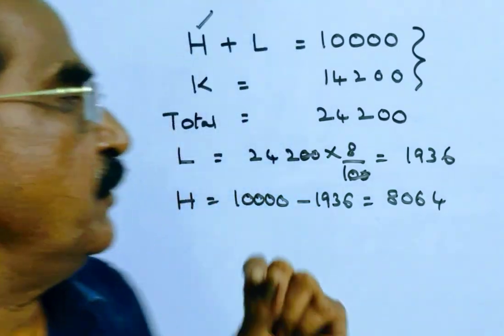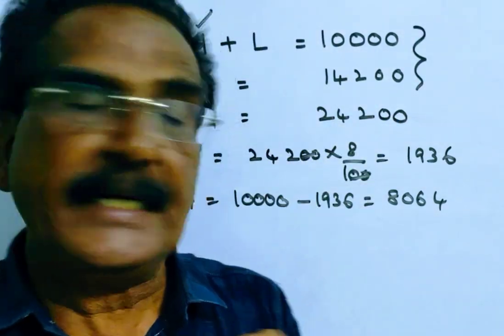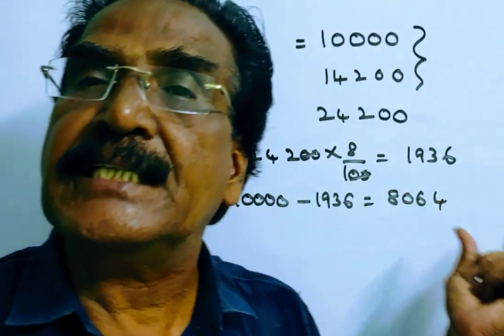Friends, if the total votes is 24,200, then Hari gets 8,064.